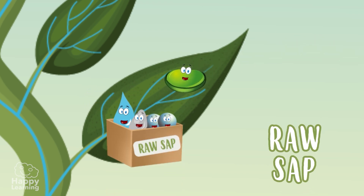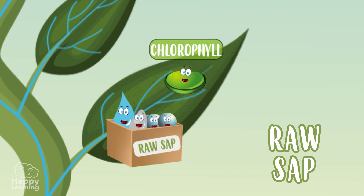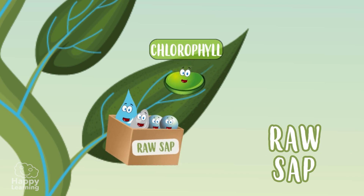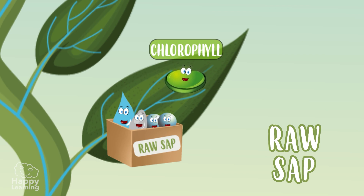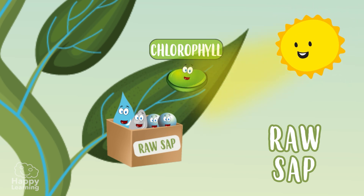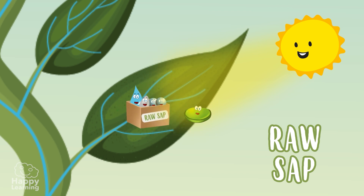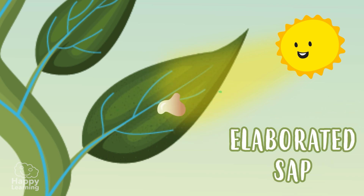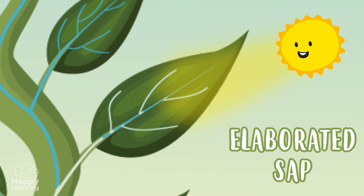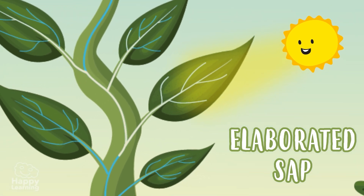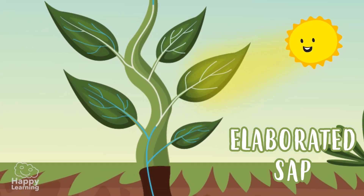Now it's chlorophyll's turn! The chlorophyll in the leaves has all the necessary ingredients for photosynthesis to take place. And when it receives sunlight, the process begins by transforming the raw sap into elaborated sap, which circulates around the plant and works as food.